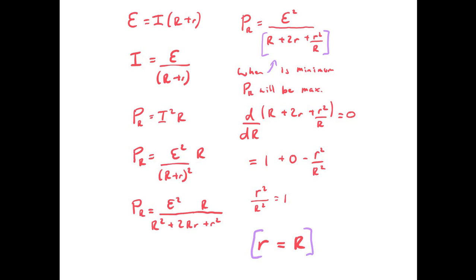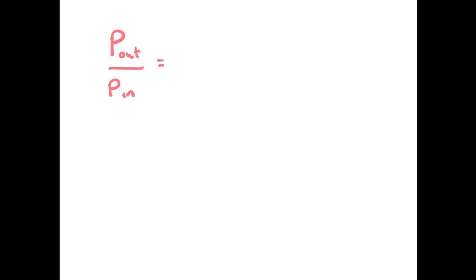Now what's that going to do to the efficiency? Let's have a look. We know power out over power in is our efficiency, which is I²R over I²(R + r), which gives us R/(R + r).